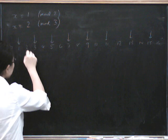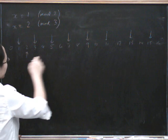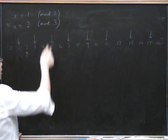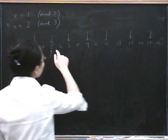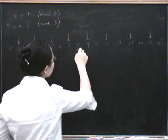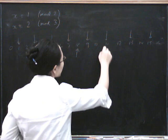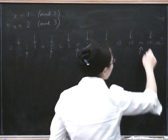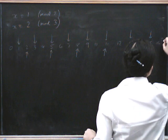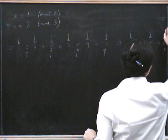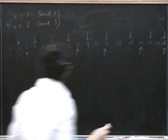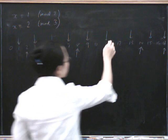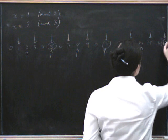For congruent to 2 mod 3, I mark those numbers below. Oh, there's a solution — it satisfies both the above and the below. And if I keep going, there'll be one here and one here. So there's another solution there. And if I draw in 17, I'll get another solution there as well. So where are the solutions? There's this one, this one, and this one.